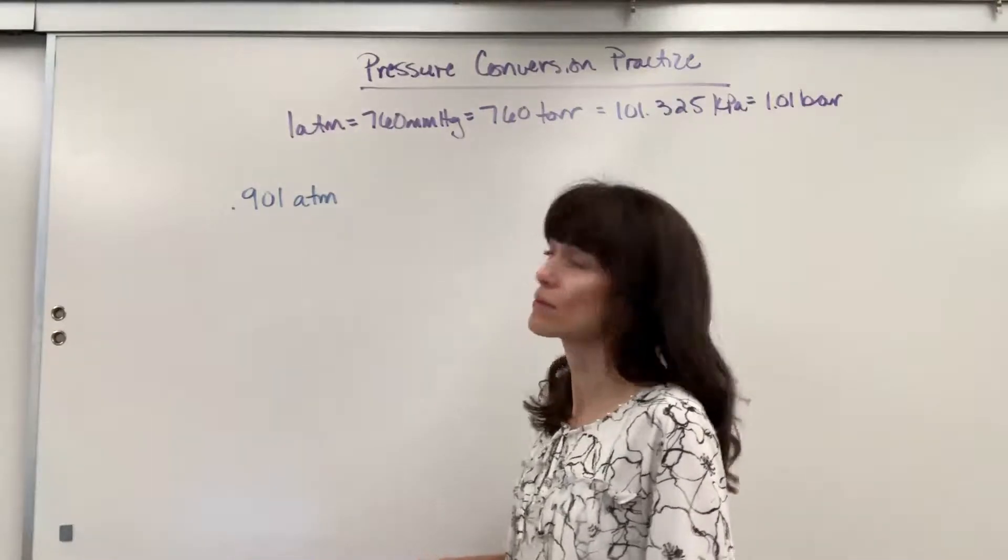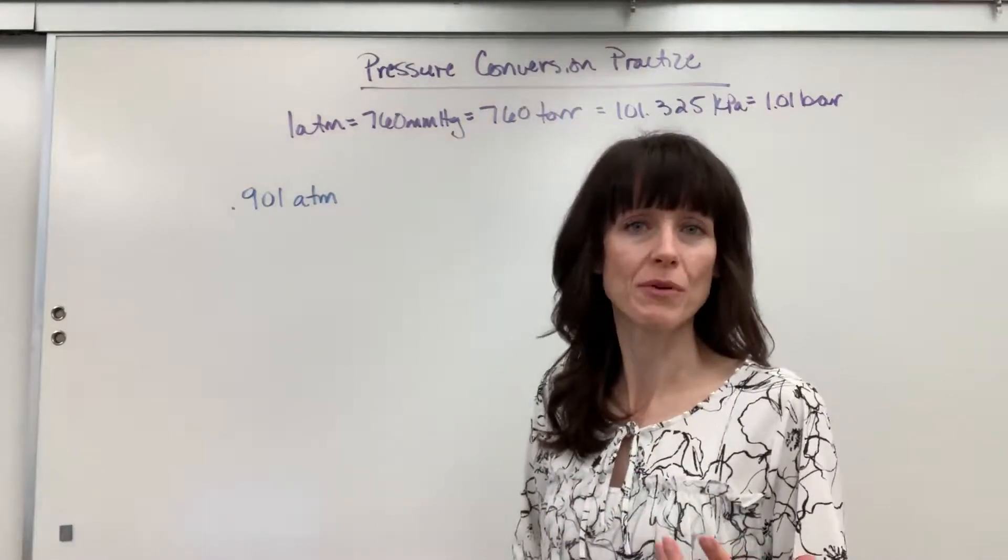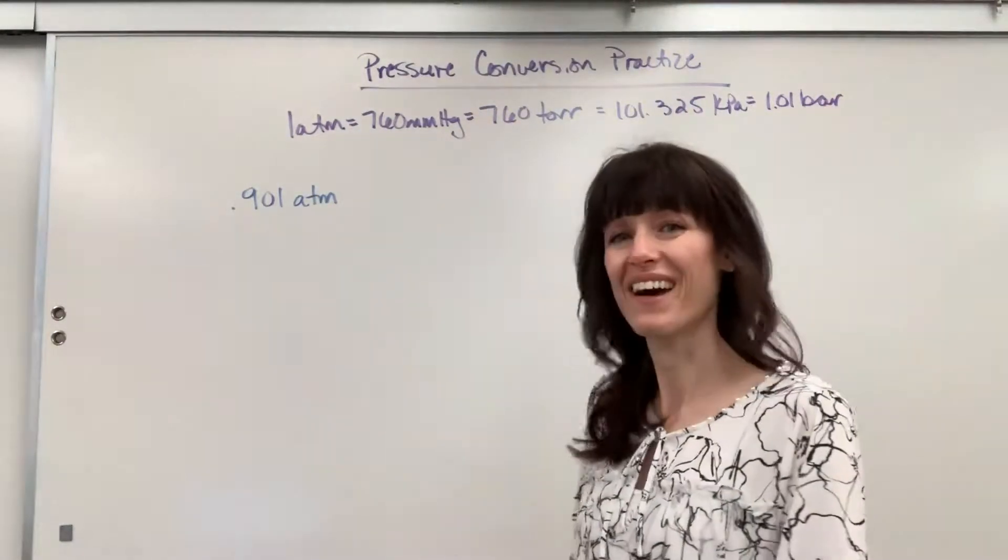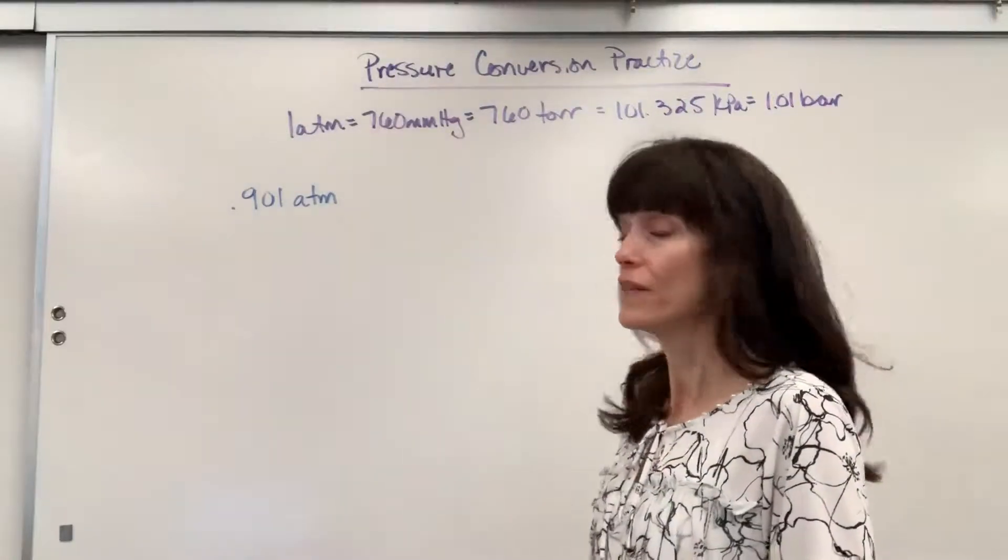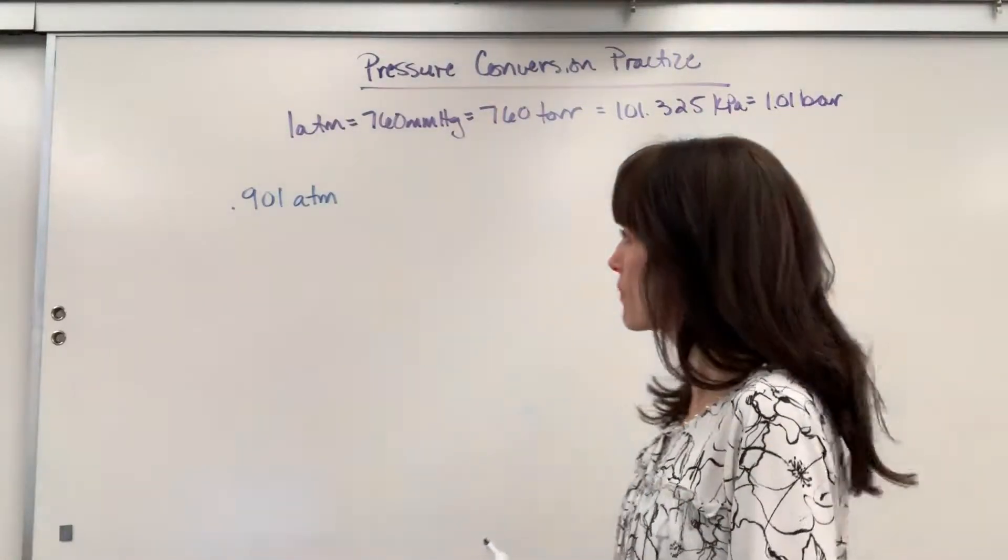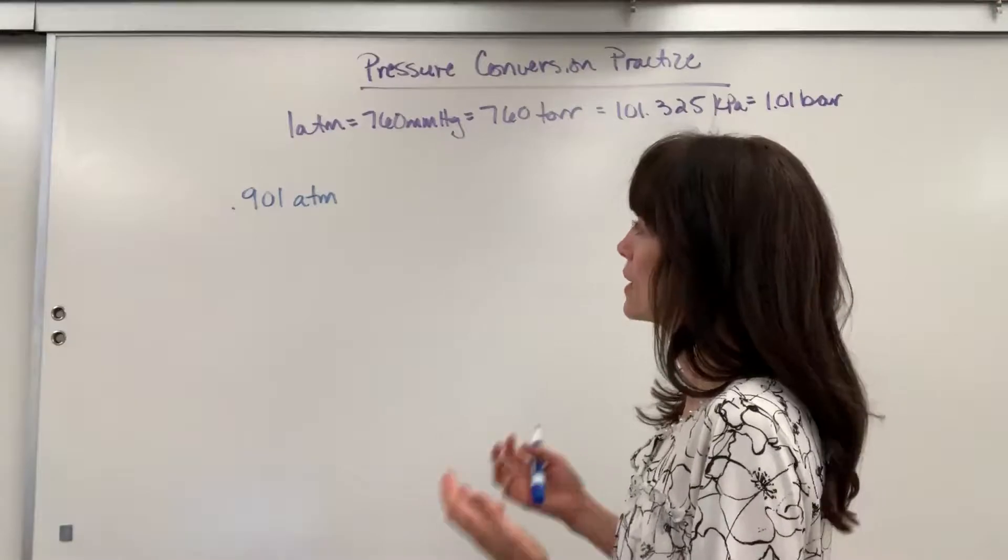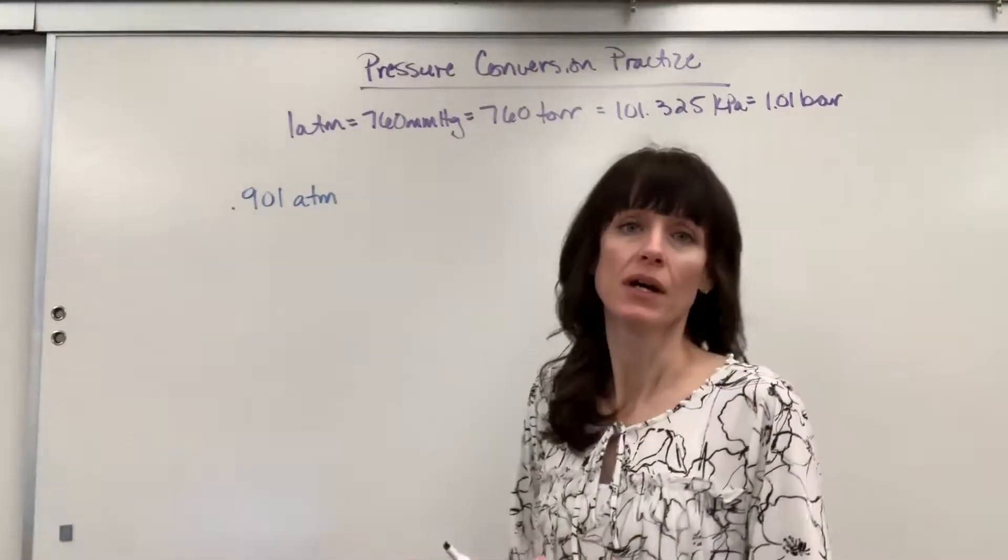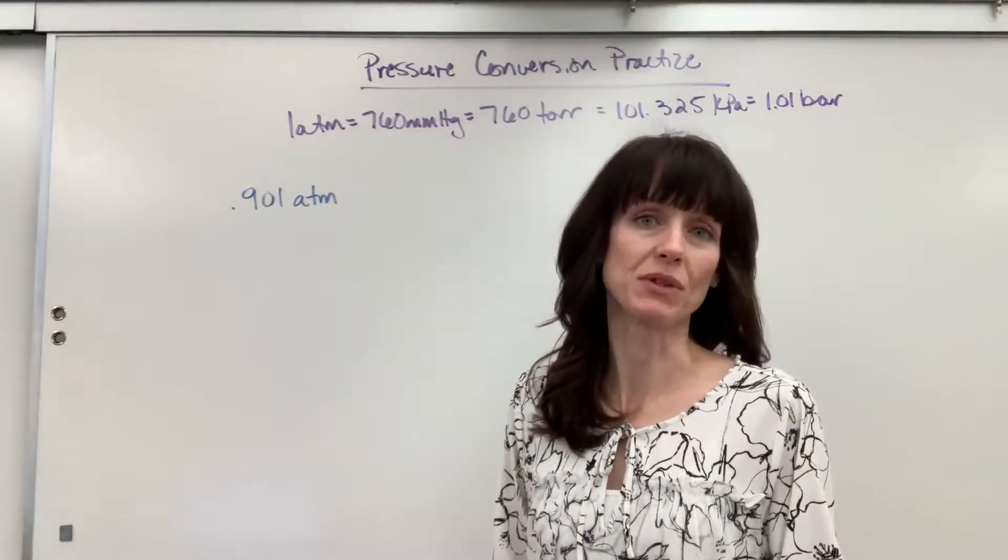We're going to start with 0.901 atm. This is going to be a common pressure for where I live. It's a high elevation, so a little bit lower pressure than what you would find at sea level. Okay, so if I have 0.901 atm, let's pretend that I need to convert to millimeters of mercury.